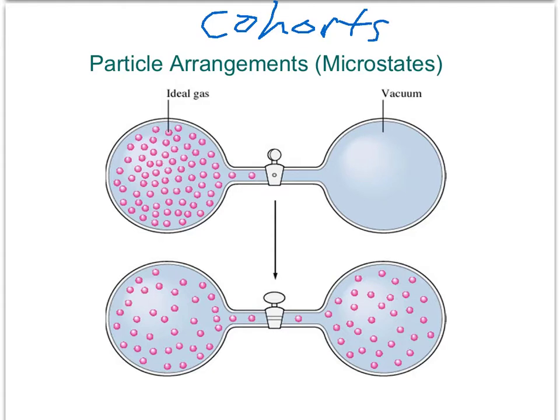Let's take a look at a simple example, namely this two-bulb system. Here we have two bulbs connected by a valve. Our system is the entire two-bulb apparatus. This system contains two cohorts, namely the bulb on the left and the bulb on the right.